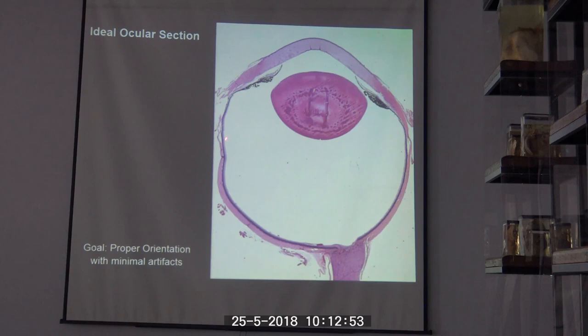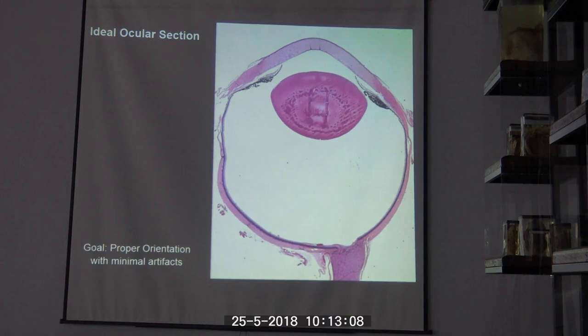Even in this ideal section you can see that we still had some tissue tearing and loss. But hopefully as I give suggestions on what to do at each step of the process, you will be able to come to an end product that looks pretty much like what we have here. So let's get started.